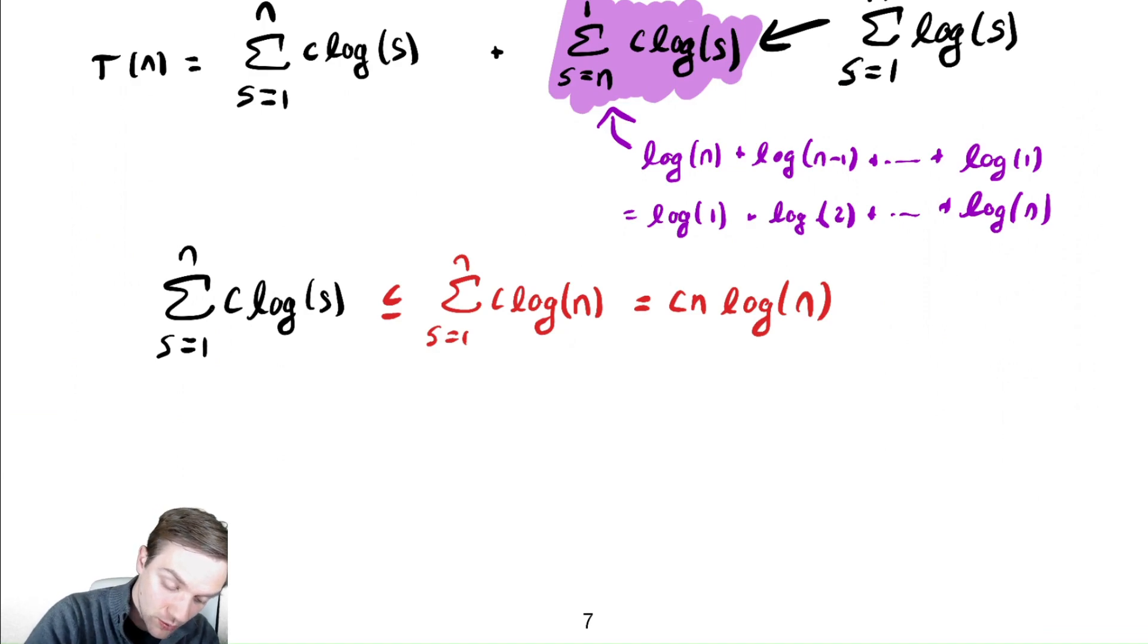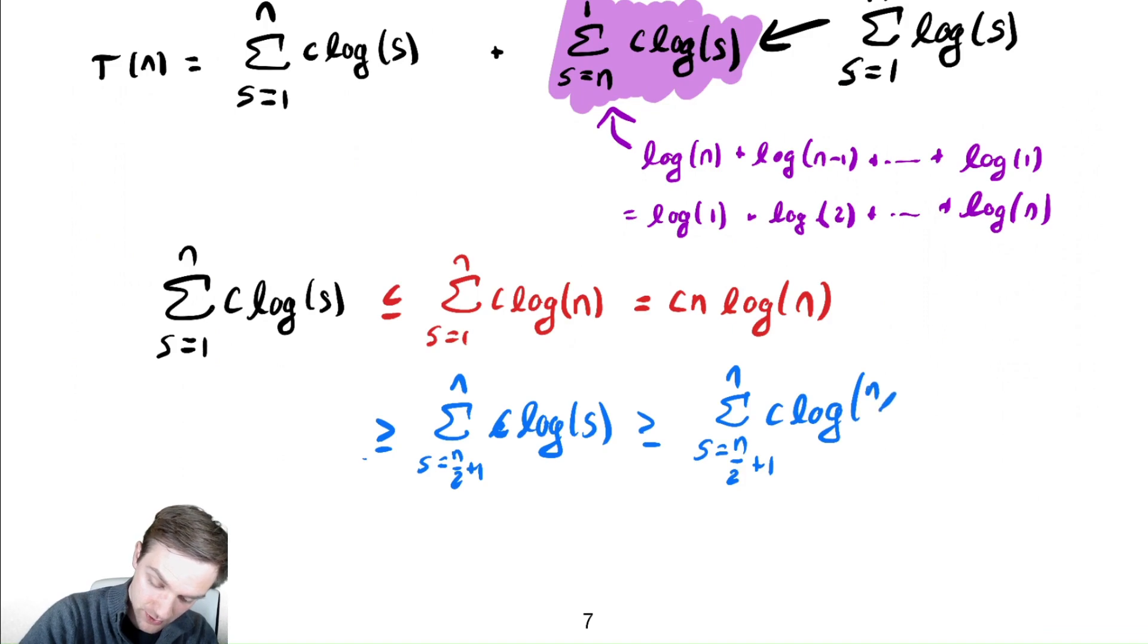To bound it below, I'm going to split the summation in half and keep the second half of the terms because it is an increasing summation. We have c times log of s. I'm then going to replace s with n over 2. And I have n over 2 times c times log of n over 2.